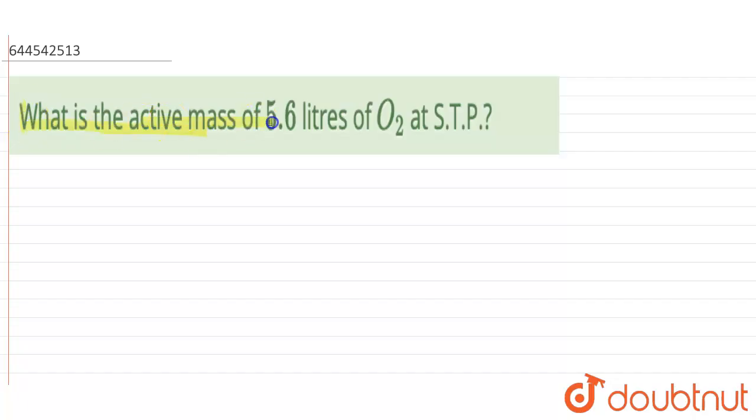It is given: what is the active mass of 5.6 liters of O₂ at standard temperature and pressure? When we see standard temperature and pressure, we must understand that at STP, the volume of oxygen is going to be equal to 22.4 liters. So we need to find the active mass of 5.6 liters of oxygen.